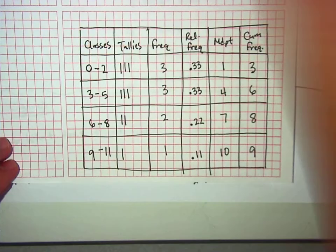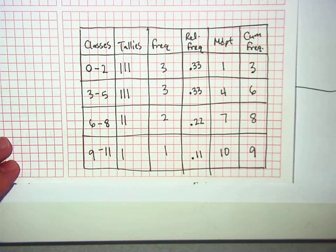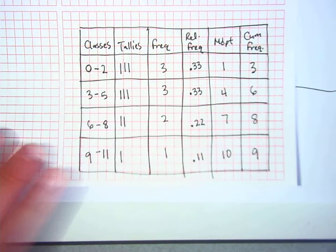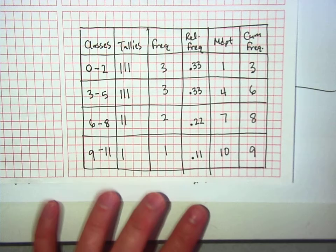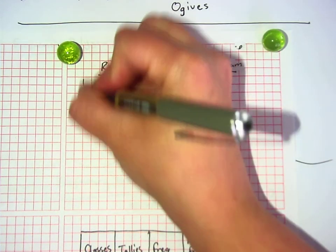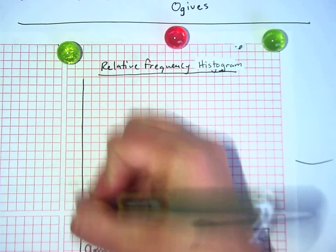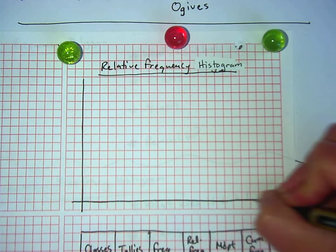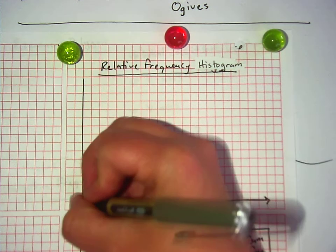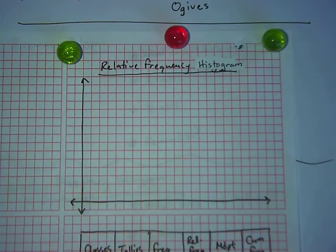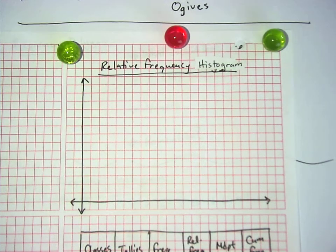All right. We're going to start with a relative frequency histogram. I know it's not the first one on our list, but it is the easiest one. It is exactly like the frequency histogram of yesterday. Now we're going to concentrate on using the graph paper we have.